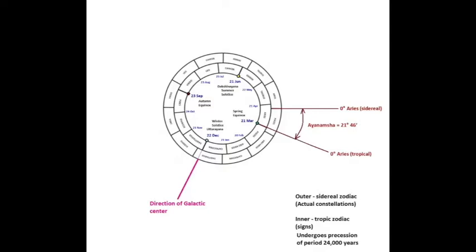Since then, because of precession, the two zodiacs have been slowly moving apart. Therefore the tropical zodiac shows the actual astronomical positions of some 2000 years ago and not the current astronomical positions.